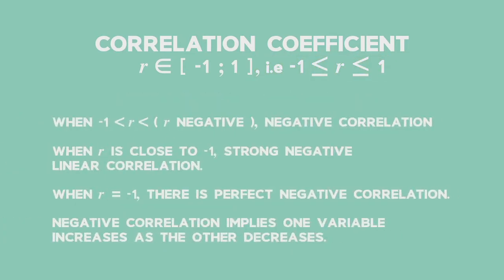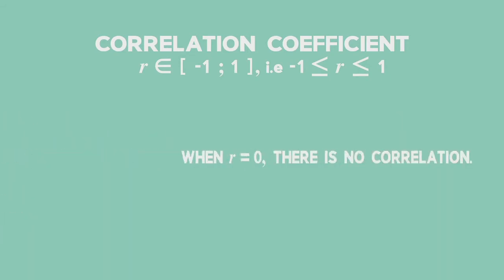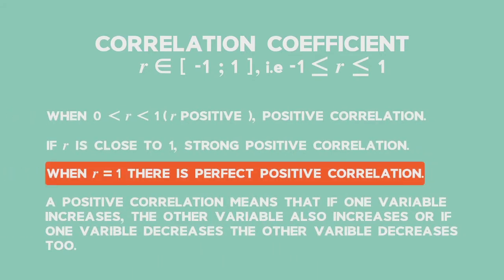When r is equal to negative 1, there is perfect negative correlation. When r equals 0, there is no correlation, and when r equals positive 1, there is a perfect positive correlation.